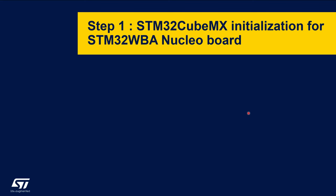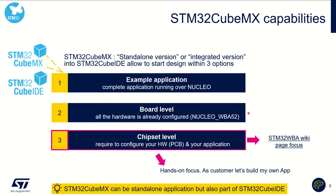Step one: hardware initialization. As discussed during the click and go and how-to-start evaluation, using STM32 CubeMX, you can start from a code example at board level or at chipset level. This is our focus today — starting at chipset level. As a customer, if I want to build my own application based on an ST chipset, let's start from chipset level.